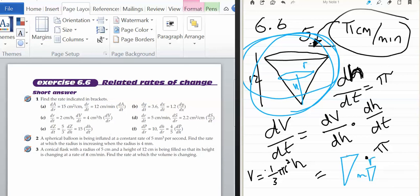r over h equals 5 over 12. I can use this to get an equation in terms of r and h. Rearrange it to then replace the h over here.